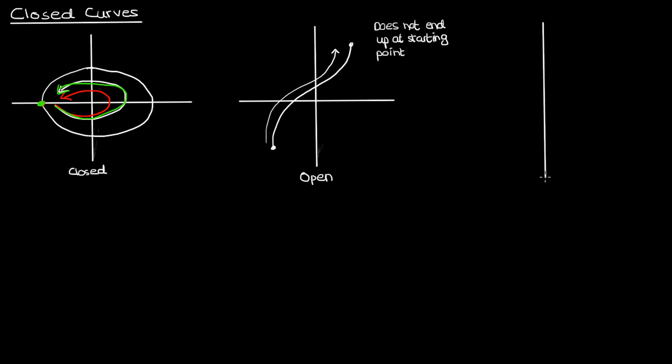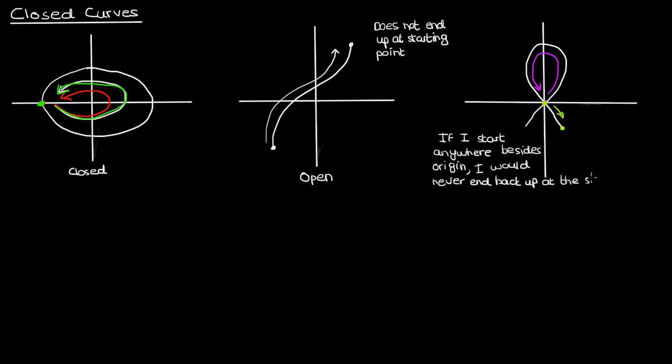But what if I were to draw something more ambiguous? Consider a curve like this. If I started my car from the origin and traversed along this loop, then I would end up back at the origin. However, if I continued the car, I would eventually leave the loop, go down this line, and get to a point where I never end back up at the origin again. In addition, if I were to start my car at any point besides the origin, I would never end up back where I started.